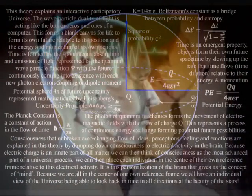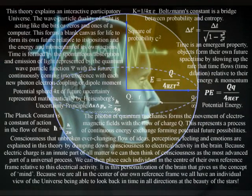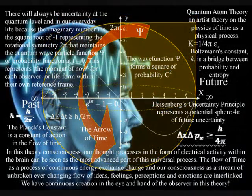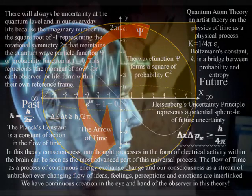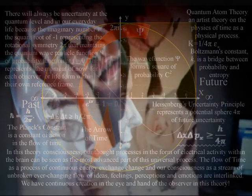And because the photon is also the carrier of the electromagnetic force, electrical potential is linked to our future potential, with the electrical activity in the brain representing the most advanced part of this universal process. Therefore, conscious thought is always in the moment of now, with a continuous stream of thoughts and ideas that can comprehend this process as time, as an interactive process of continuous creation with a potential future infinity of possibilities.